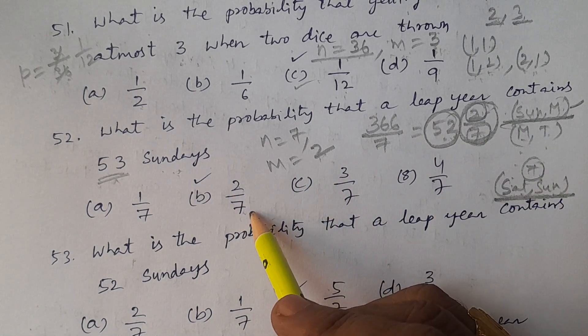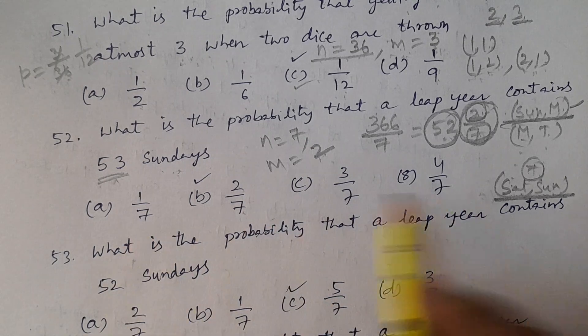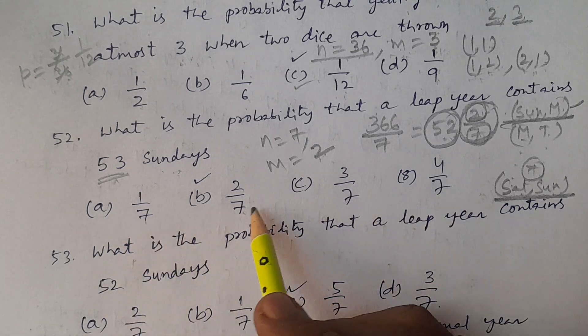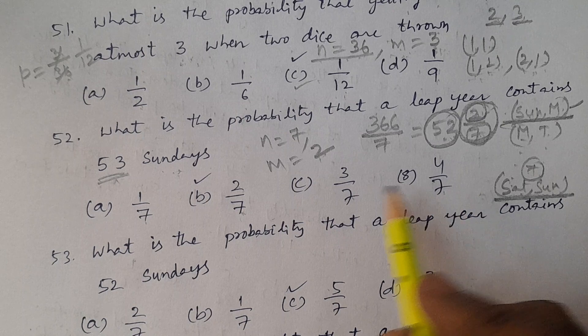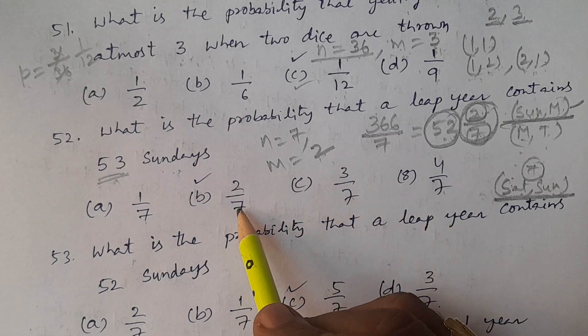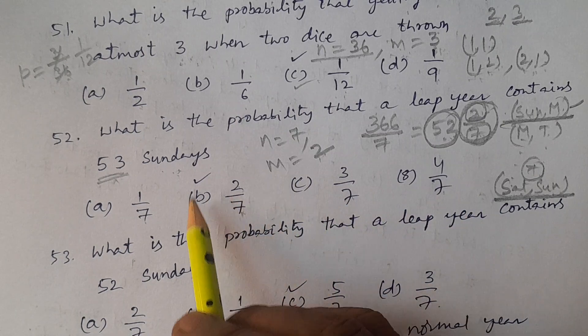Therefore the probability = m/n = 2/7. The options are 1/7, 2/7, 3/7, 4/7. The answer is 2/7.